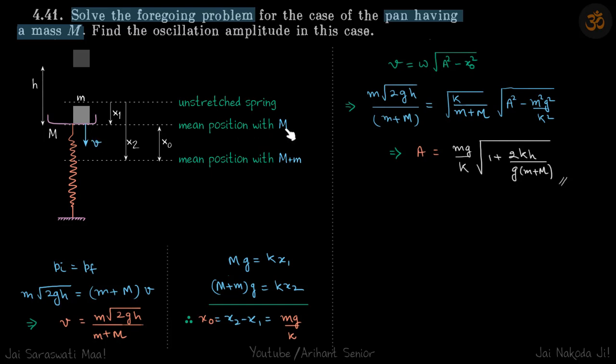The mean position with just M: the unstretched spring will be somewhere here, the mean position with M will be here, and once they stick together, the new mean position will be somewhere even further down.